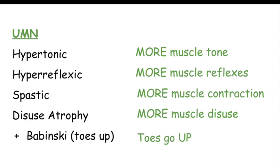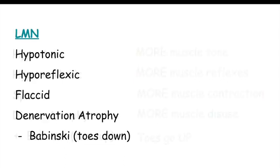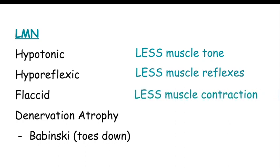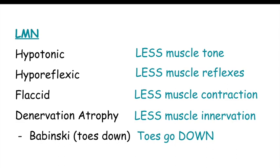For lower motor neuron lesions, remember the down arrow — that means less. Hypotonic means less muscle tone, hyporeflexic means less muscle reflexes, flaccid means less muscle contraction, denervation atrophy means less muscle innervation, and a negative Babinski sign means the toes go down. Less tone, less reflexes, less contraction, less innervation, toes go down.